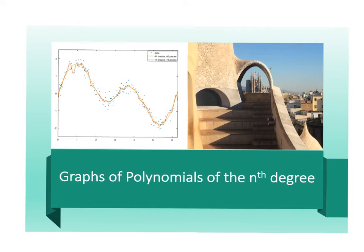Today we're going to look at the graphs of polynomials of the nth degree. What you need to be able to recognize — looking at this graph here, this is a polynomial to the nth degree. You should look at the orange region, which is the theoretical value. You can see that you've got maximum, minimum, maximum, minimum, and then up again.